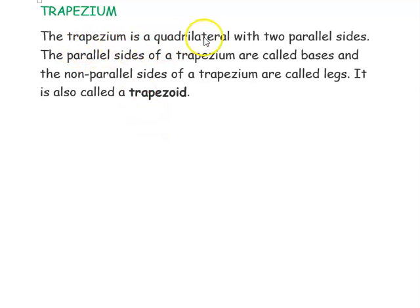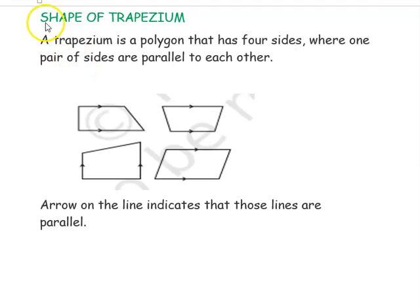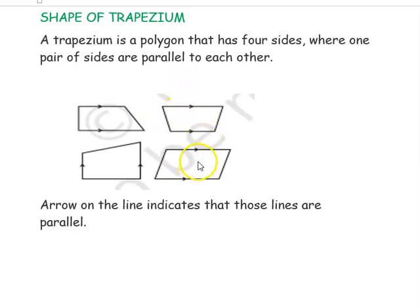Trapezium is a quadrilateral with two parallel sides. The parallel sides of a trapezium are called bases and the non-parallel sides are called legs. It is also called a trapezoid. A trapezium is a polygon that has four sides where only one pair of sides are parallel to each other. The arrows on the lines indicate that those lines are parallel.